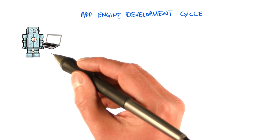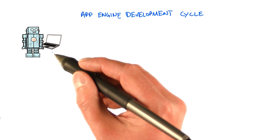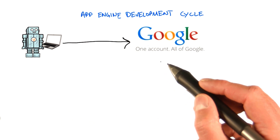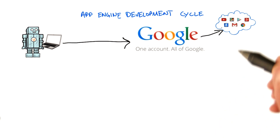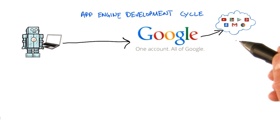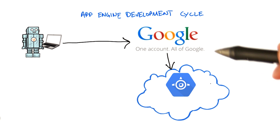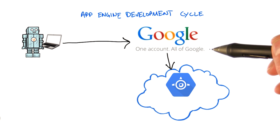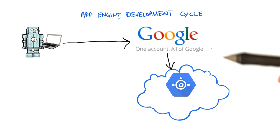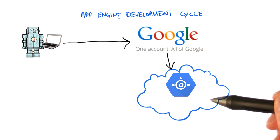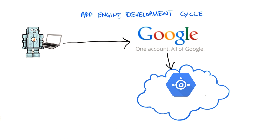First of all, here you are, a star developer, and you should already have a Google account that you probably use for many different Google services, such as Gmail, YouTube, Google+, et cetera. Well, guess what? Your standard Google account also allows you to create App Engine applications that run on the Google Cloud platform. So there is no additional account required.